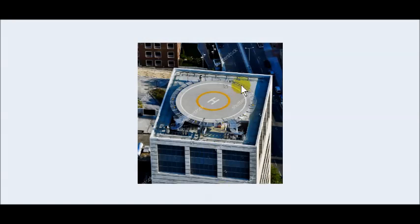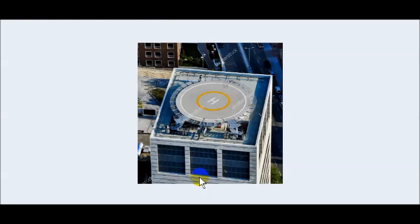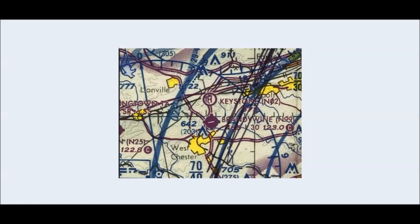As we fly around we will see things like this — we'll see the H — and that indicates a helipad. You see the pad up top and the stairway, and this is probably a hospital or some building that has executives flying in and out. Here's an actual depiction on a sectional chart of a heliport: you see a circle with an H in it.